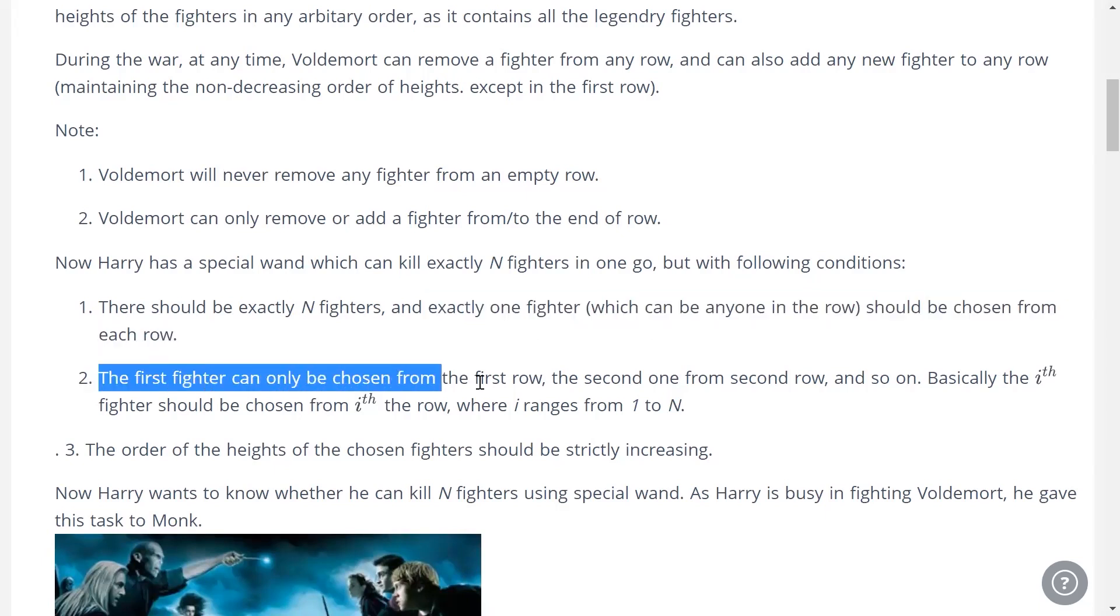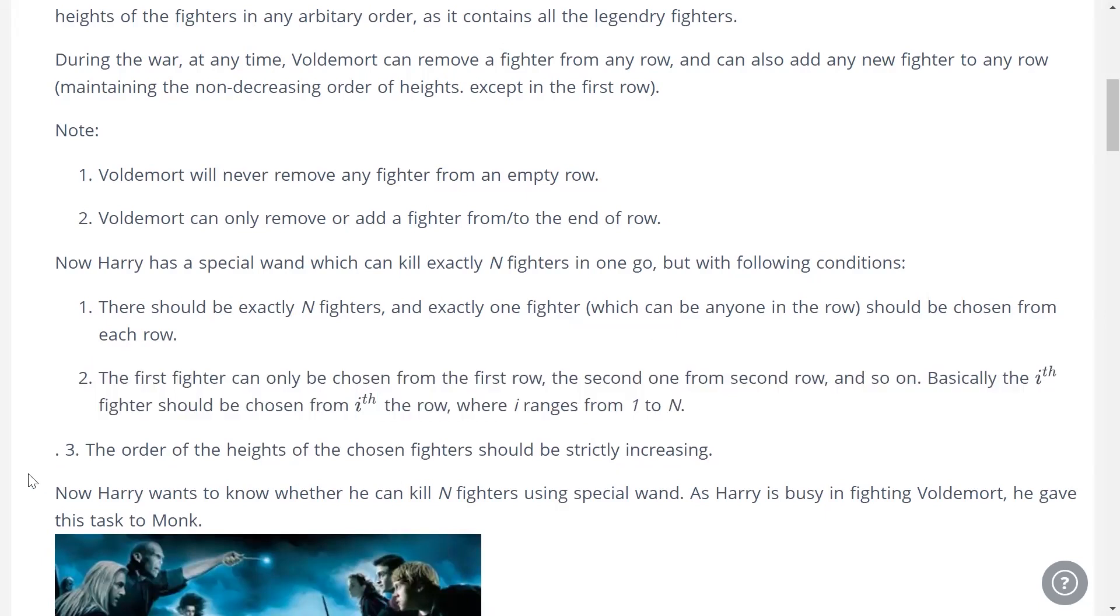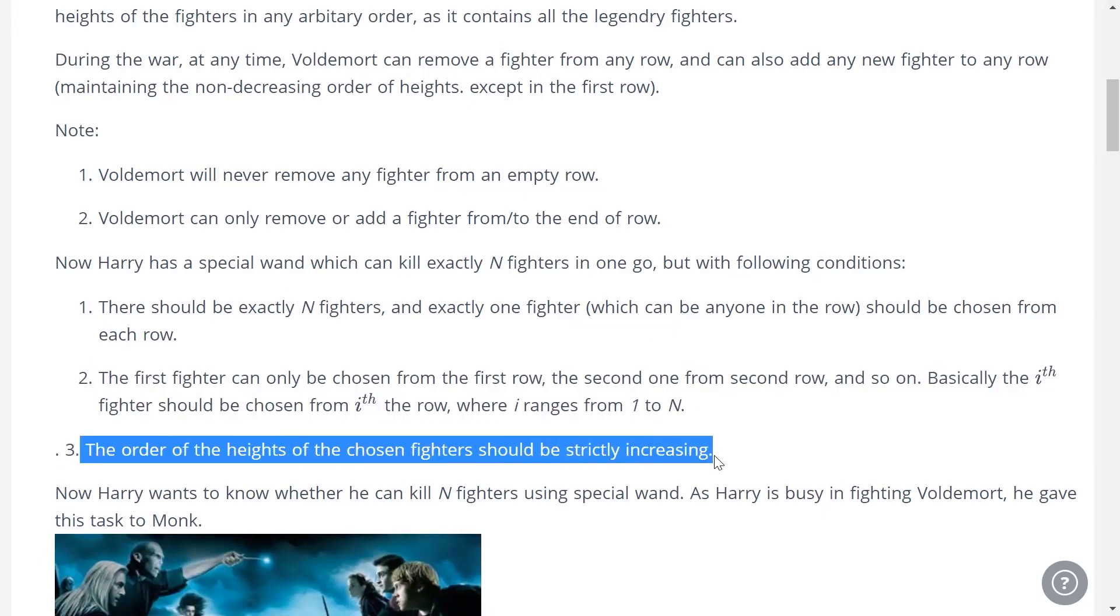The first fighter can only be chosen from the first row, the second from the second row and so on. Basically, the ith fighter has to be chosen from the ith row, and the order in which we choose these fighters has to be strictly increasing. If we choose a fighter from the first row, the fighter we choose from the second row has to be taller than the previous one. The fighter from the third row has to be taller than the second fighter and so on.